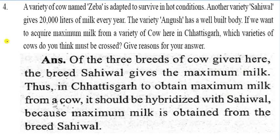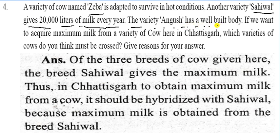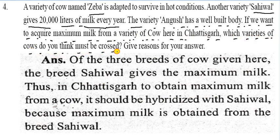Question 4: A variety of cow named Jeeva is adapted to survive in harsh conditions. Another variety called Sahival gives 20,000 liters of milk every year, and the Angus variety has a well-built body. If we want to acquire maximum milk from a variety of cow in Chhattisgarh, the breed Sahival gives the maximum milk. Thus, to obtain maximum milk from a cow in Chhattisgarh, it should be hybridized with Sahival, because maximum milk is obtained from that breed.